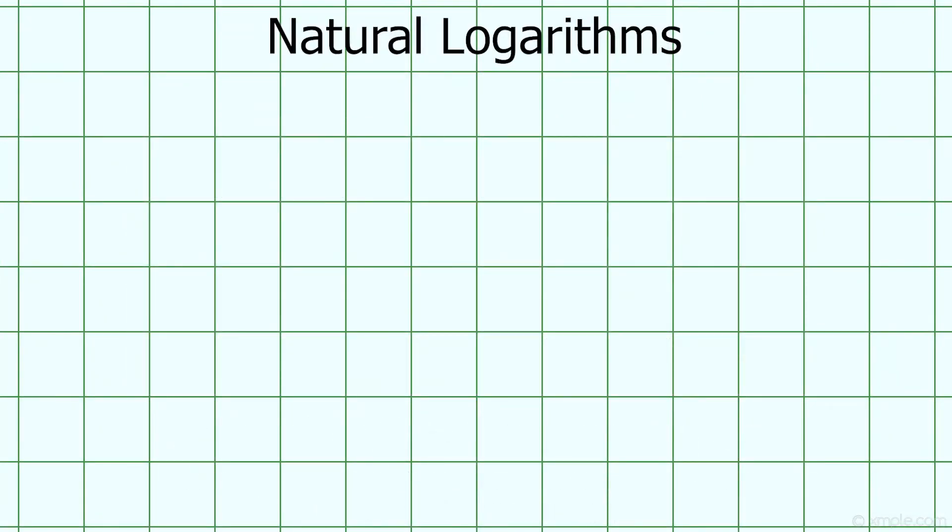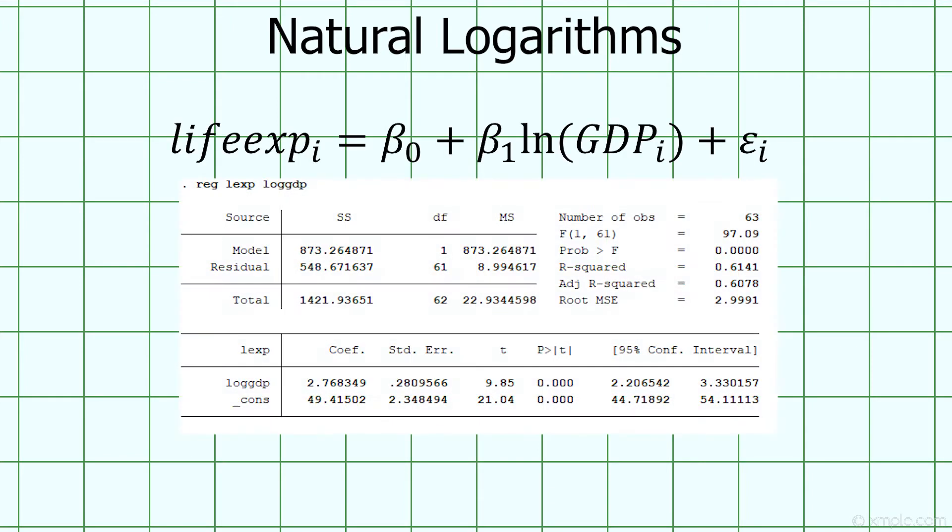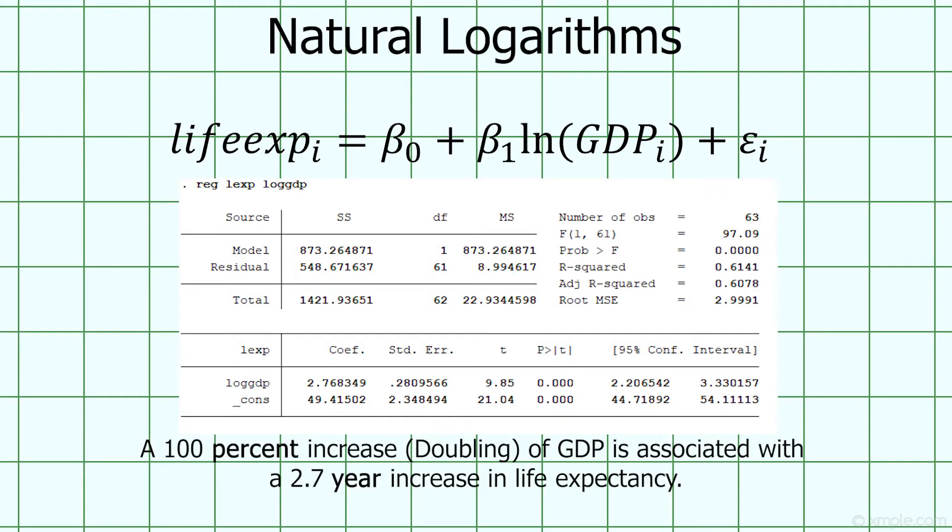We can also use log transformations as independent variables, like in this example. Here, we would interpret the coefficient as telling us that doubling GDP per capita, or increasing it by 100%, increases life expectancy by about 3 years.